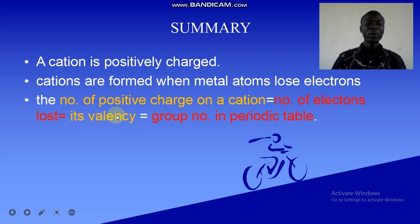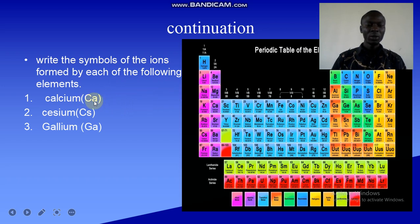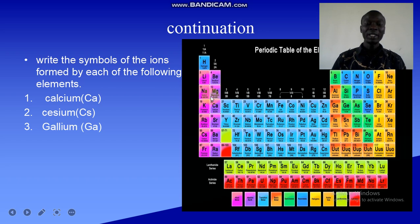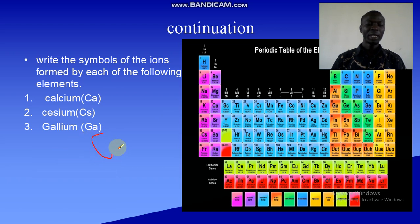You can apply this to questions like: write the symbols of the ions formed by each of the following elements. For calcium, look in the periodic table — calcium (Ca) belongs to group 2. So it will lose 2 electrons, its valency will be 2, and its symbol is Ca²⁺.